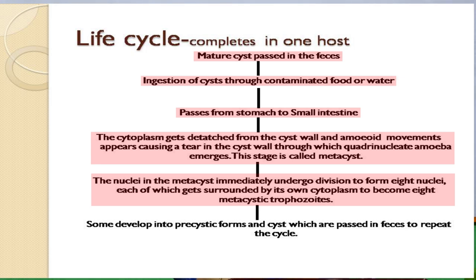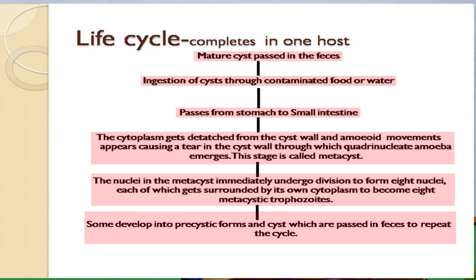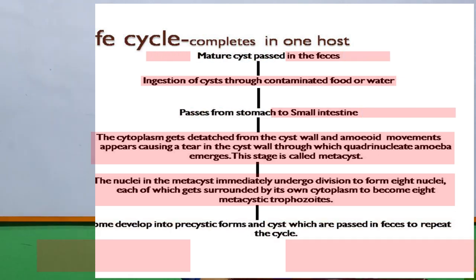Some trophozoites develop into the pre-cystic form and then into cysts, which are passed in the feces to repeat the cycle. These pre-cystic forms and cysts from an infected patient are passed out and, if ingested by another host, repeat the cycle.